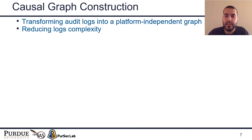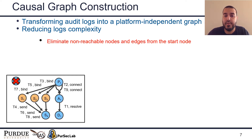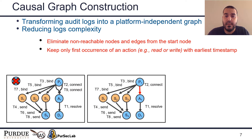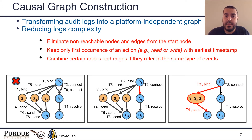In the graph construction component, ATLAS parses the audit logs to construct a causal graph. To reduce the log's complexity and extract shorter sequences, ATLAS constructs a simplified graph with a smaller number of nodes and edges using a set of graph optimization techniques. The first technique eliminates all non-reachable nodes from the start node. Second, ATLAS removes redundant edges and keeps the edge with the oldest timestamp. Finally, ATLAS combines certain nodes and edges if they refer to the same type of events. These optimizations greatly simplify graph complexity and make audit log analysis easier.